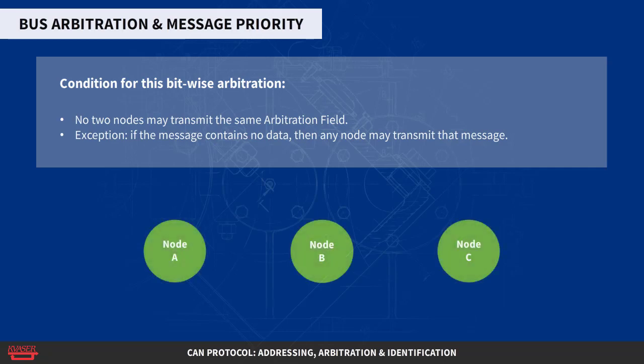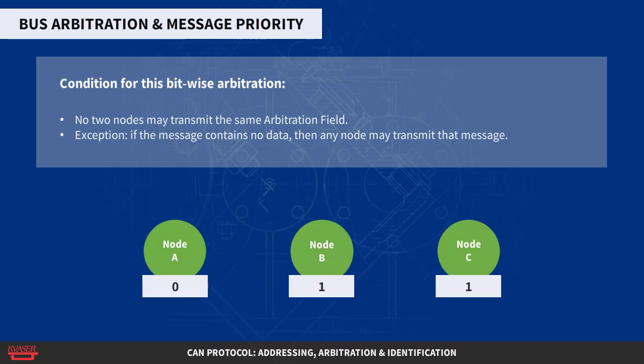Since the bus is wired AND and a dominant bit is logically zero, it follows that the message with the numerically lowest arbitration field will win the arbitration.